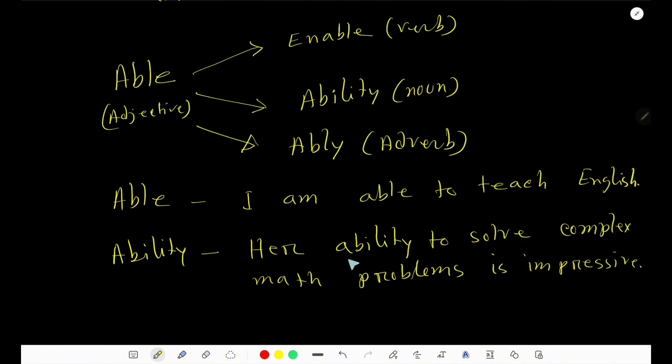Here, we have used the word ability as noun. Look, her ability, this is the head word and this is a possessive adjective.